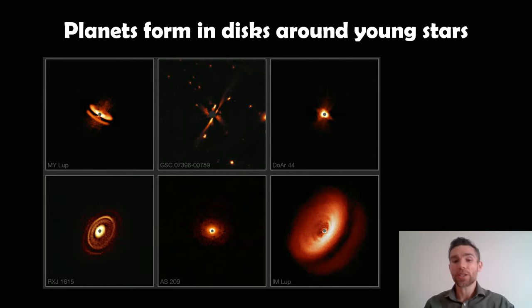They have a finite time to do that and these are some images actually of some disks around young stars that have actually been imaged. These are real ones so we know that this is actually how planets typically form.